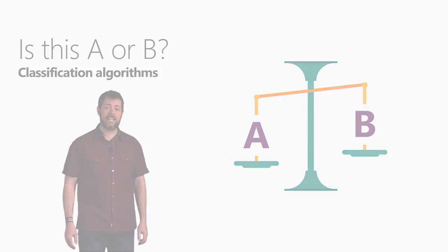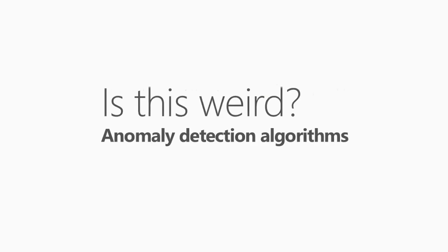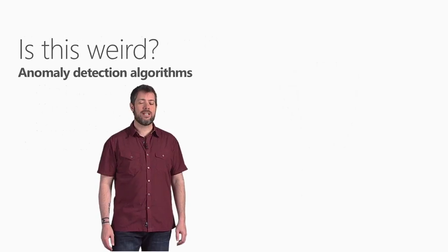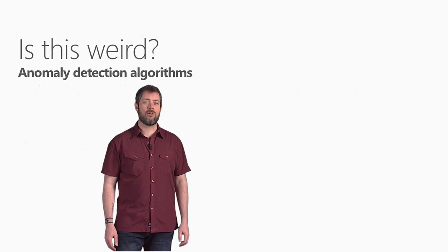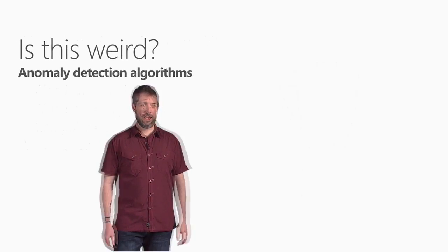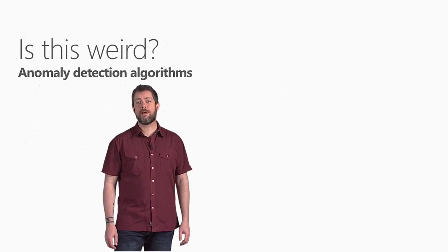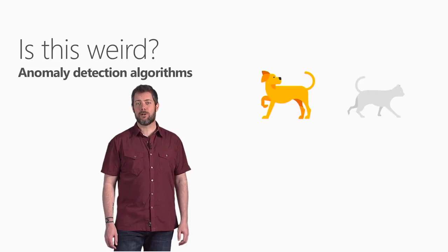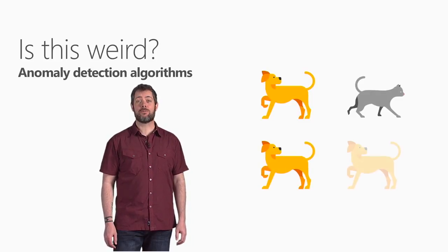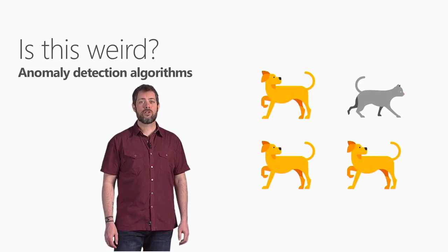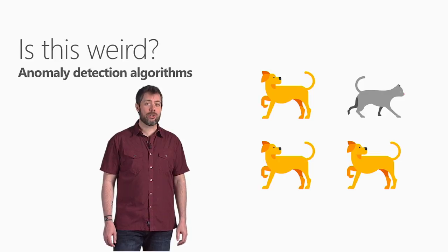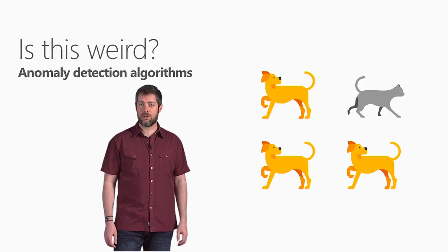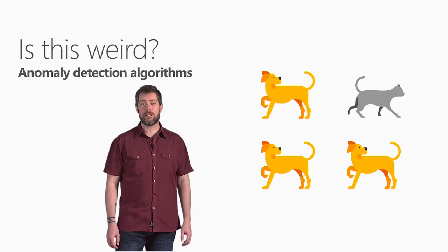The next question data science can answer is, is this weird? This question is answered by a family of algorithms called anomaly detection. If you have a credit card, you've already benefited from it. Your credit card company analyzes your purchase pattern so that they can alert you to possible fraud. Charges that are weird might be a purchase at a store where you don't normally shop or buying an unusually pricey item.